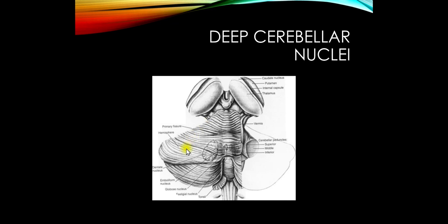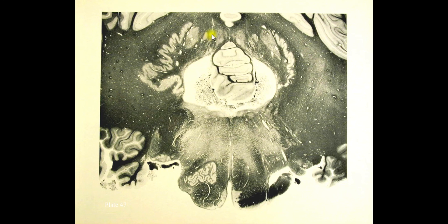Here's a drawing to show the deep cerebellar nuclei. From lateral to medial: dentate, emboliform, globose, and fastigial (midline). Here it is in the brainstem section. There is also the nodulus — remember, the flocculonodular lobe communicates with the fastigial nucleus.